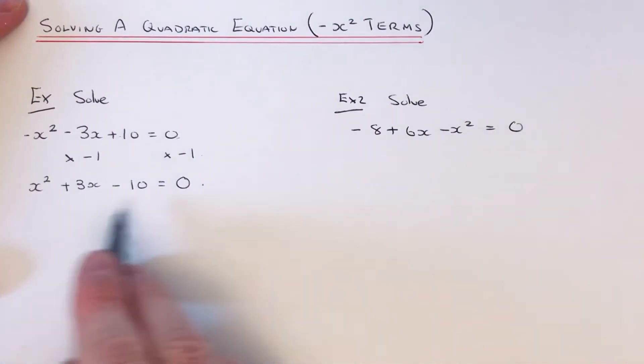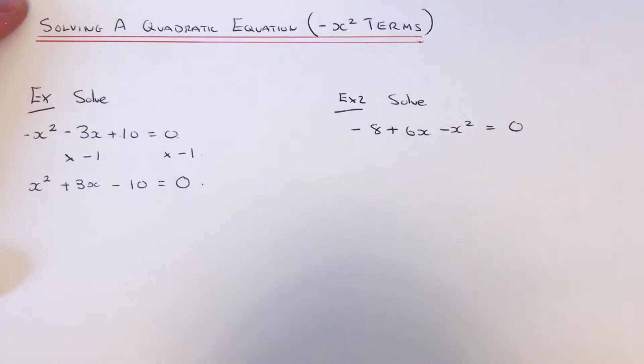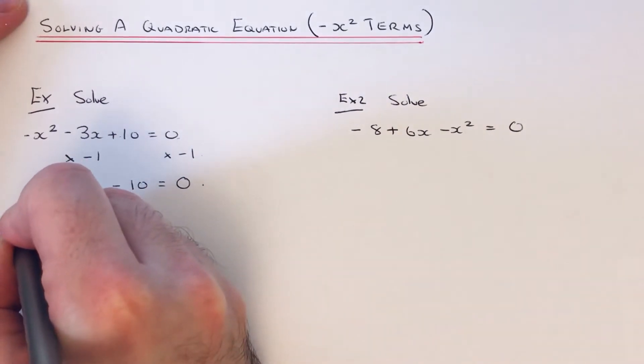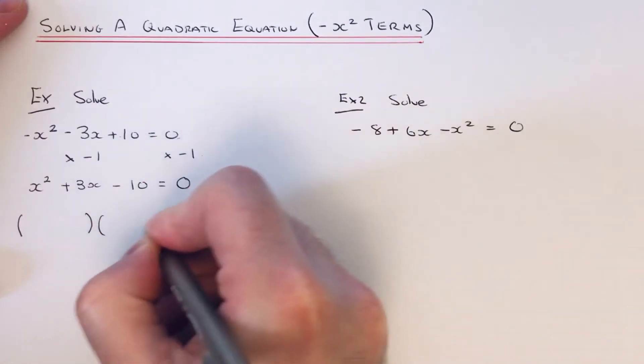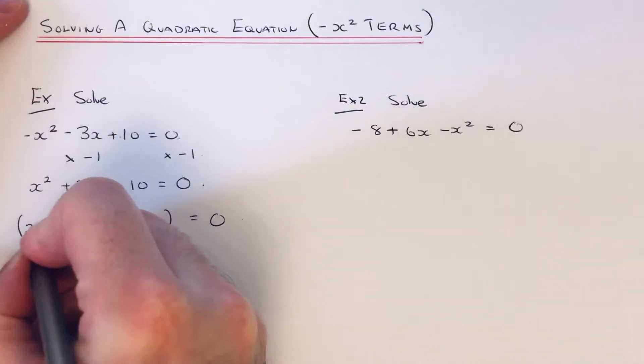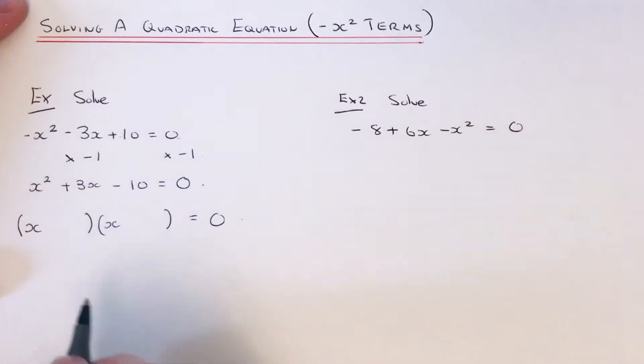So once we've done this, we can now put it into double brackets. If it doesn't go into double brackets, you can use your quadratic formula to solve it. So our first term is x squared, so we've put an x at the start of each bracket.